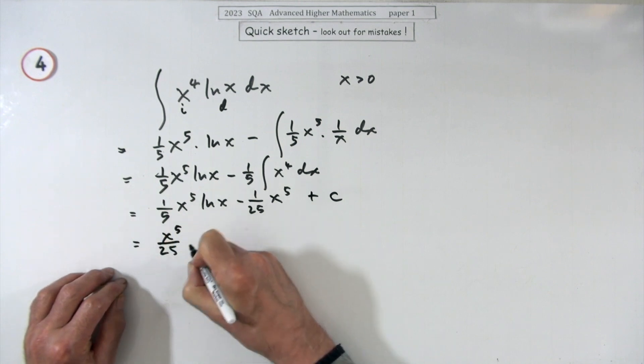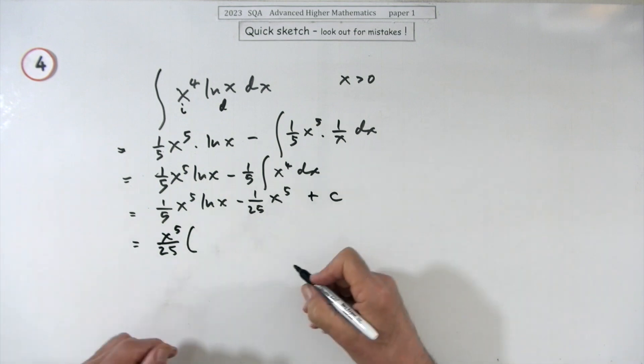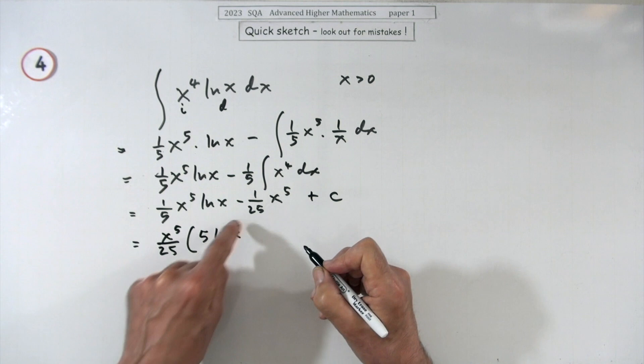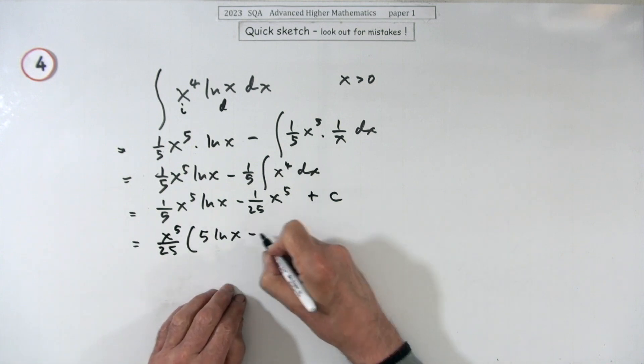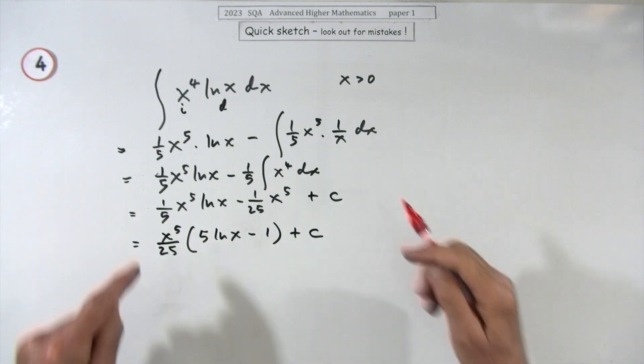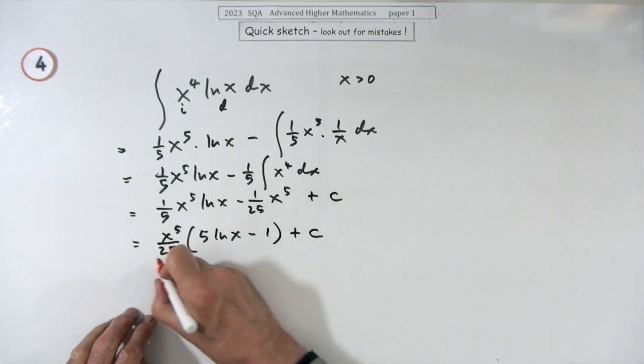So you could take out x to the five over twenty-five, but it didn't say simplify, so you don't need to do that. That means I need to leave five in there. Now you've got another option: you could put that five in as a power, but that'll just be minus one. I suspect that's the line they want, but I'm going to go to here.